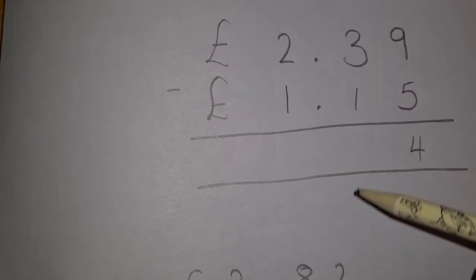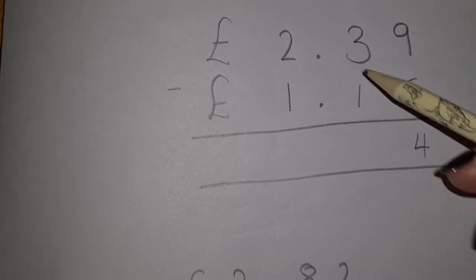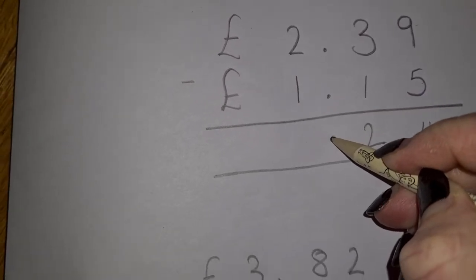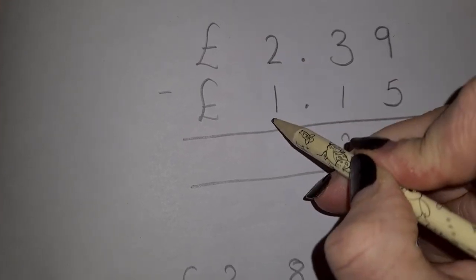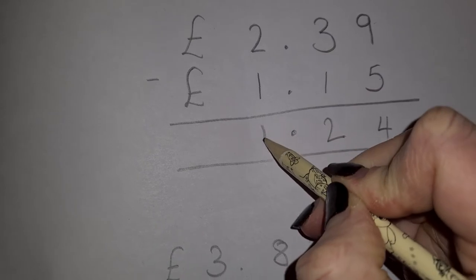Then I'm going to look at the tens column. 3 is bigger than the 1, so I can take this away easily. 3 take away the 1 is 2. Make sure I put my decimal point in. Then I'm going to look at taking away the pounds. 2 pound take away 1 pound is 1.